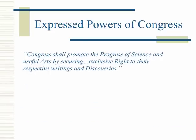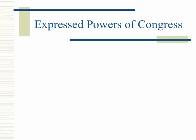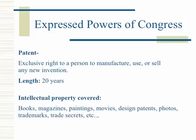Congress shall promote the progress of science and useful arts by securing exclusive rights to their respective writings and discoveries. Copyright gives an author the exclusive right to publication and resale of their work, good for life plus 70 years. A patent gives a person the exclusive right to manufacture, use, or sell any new invention, lasting 20 years. Intellectual property covered includes books, magazines, paintings, movies, design patents, photos, trademarks, trade secrets, etc.